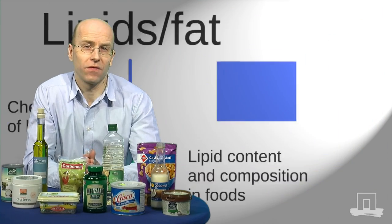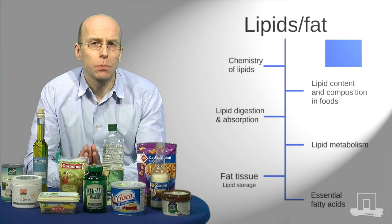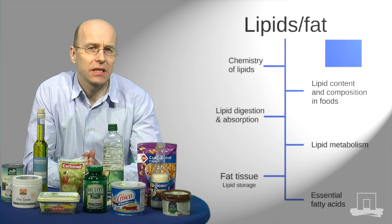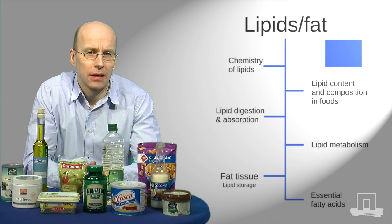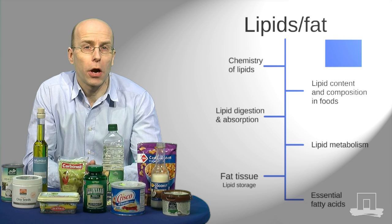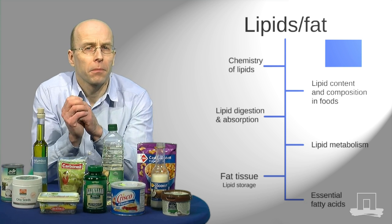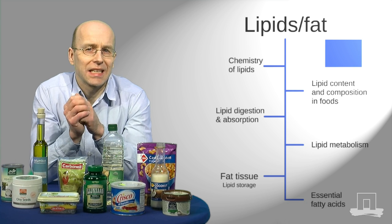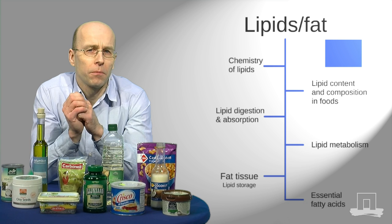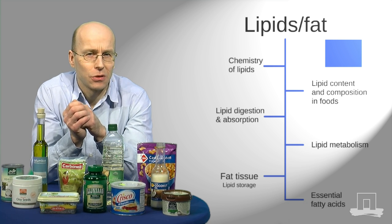Now you may wonder what happens to the fat that you consume. In this week you'll watch more animations that show you what happens to the fat once it enters our GI tract. You will learn about chylomicrons, which are special particles that transport the fat throughout the bloodstream. We will follow the fat once it gets taken up into the bloodstream, and in one video I will explain how dietary fat actually gets stored in the fat tissue.